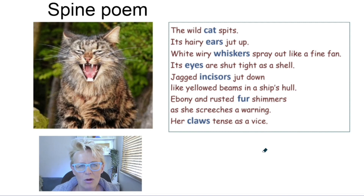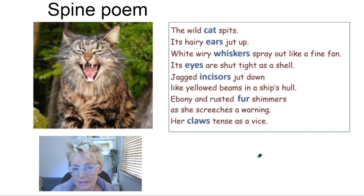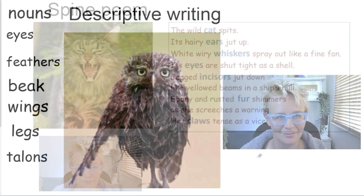What kind of words are they? If we think about what we did at the beginning, they're all nouns — names of things, parts of the body that the cat has. Built around those nouns, we've got expansion and description about what's going on.